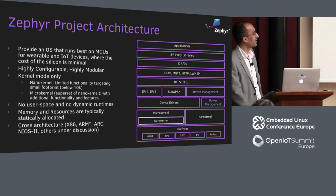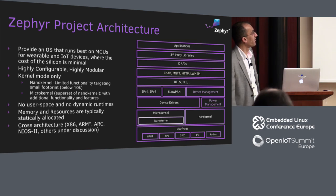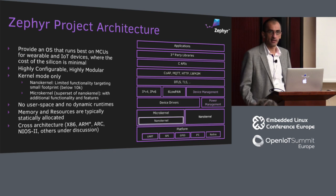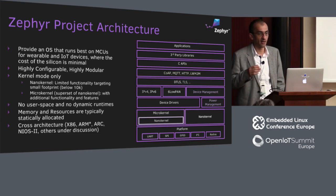Zephyr has the goal of providing an OS that runs best on MCUs for wearables and IoT, where the cost of silicon is minimal. Footprint is one of the main things we always look at and monitor. It's very important that we stay with the goals we set when we started the project. We continue adding features and supporting additional architectures, but the one goal we have is memory footprint — we want to be able to run on the smallest of devices.